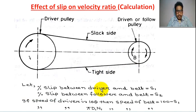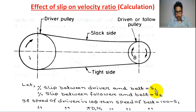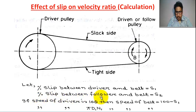Let the percentage slip between the driver and the belt equal to S1. Percentage slip between the follower and the belt equal to S2.